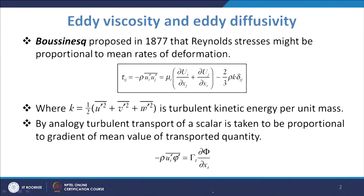For turbulent transport of scalar quantities such as heat, mass, or other scalar properties, the turbulent flux term −ρ u_i′ φ′ (averaged) equals τ_t (∂φ̄/∂x_i), where τ_t is known as the turbulent or eddy diffusivity, analogous to μ_t.